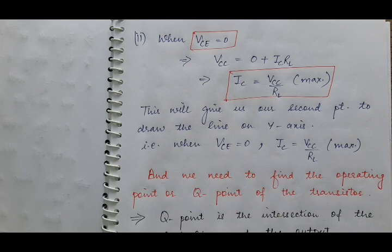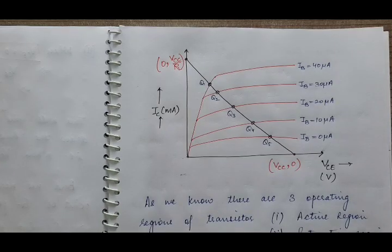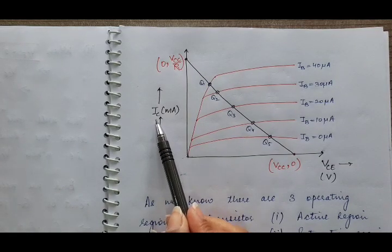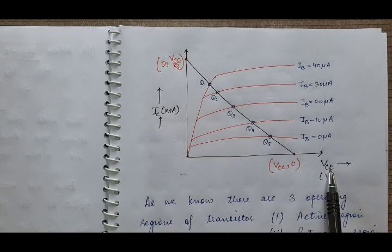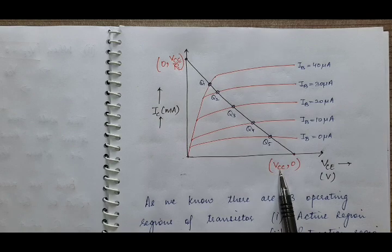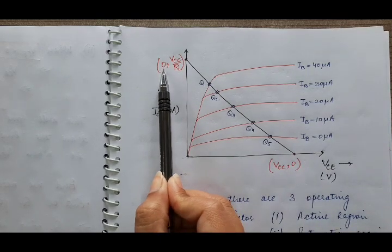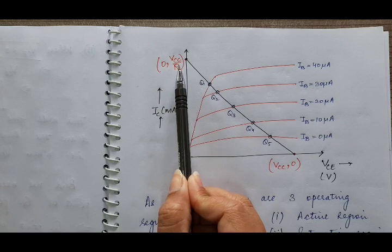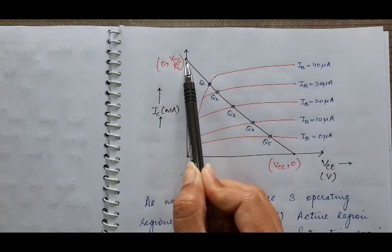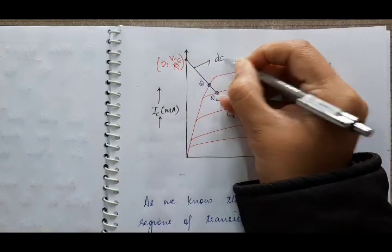So now we have two points: one point lies on the Y-axis and the second point lies on the X-axis, and we can draw the DC load line passing through these two points. Here we have plotted IC along the Y-axis, VCE along the X-axis, and this is the load line. When IC is 0, VCE equals VCC, and this point lies on the X-axis. When VCE equals 0, the maximum collector current equals VCC/RL, and this point lies on the Y-axis. The line which joins these two points is our DC load line.